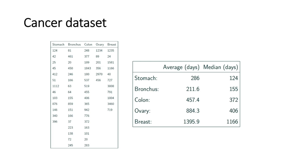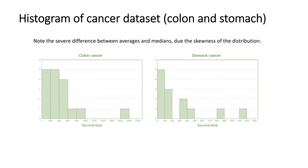As you can see from the left table, we have number of patients in row order and five cancer subtypes. You will see the average and median of survival times in days for all these patients in the right table. The histogram plots of two cancer subtypes — colon and stomach — illustrate a severe difference between averages and medians due to the skewness of the distribution. There are non-parametric and parametric tests by which we could compare these groups, though for the non-parametric one we need to first apply an appropriate transformation such as a logarithmic one.